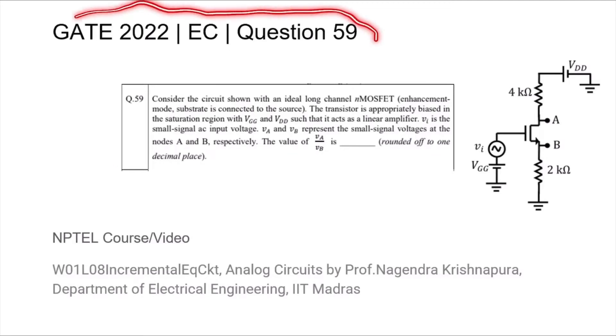This is question 59 from the GATE 2022 EC paper where we are given the following MOSFET circuit with the gate and drain bias voltages such that the transistor is a linear amplifier in the saturation region. We are asked to find out what the ratio VA by VB is, where VA and VB are the small signal voltages of the nodes A and B.